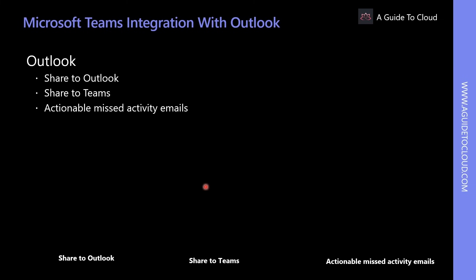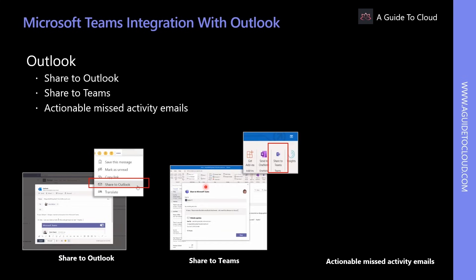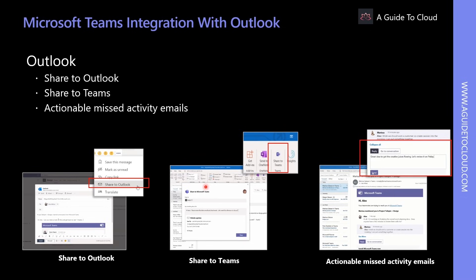The integration between Outlook and Teams makes it easy to collaborate no matter where the conversation is taking place. The first option is Share to Outlook — users can share chats or channel conversations to Outlook without leaving Teams. The second option is Share to Teams — users can move an email conversation from Outlook, including attachments, into a Teams chat or channel. The third option is actionable missed activity emails, allowing users to respond directly from within Outlook.